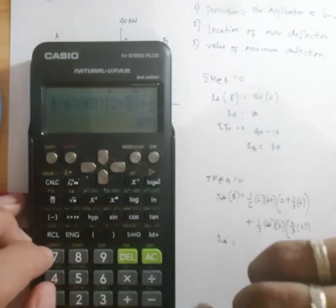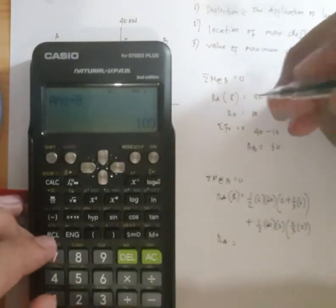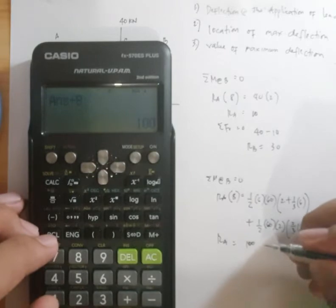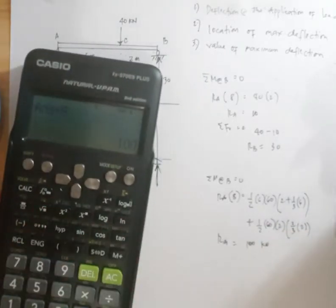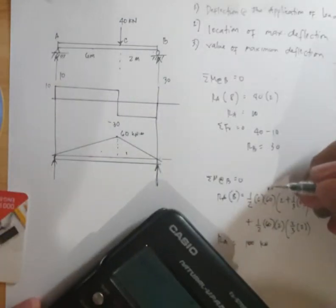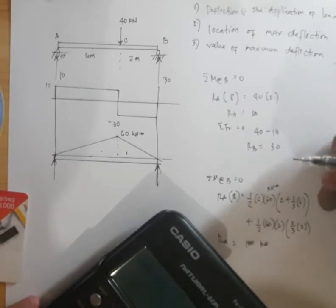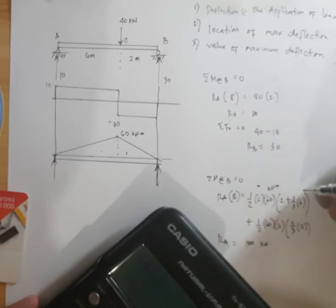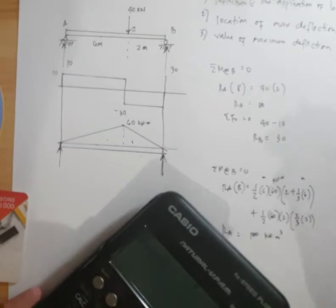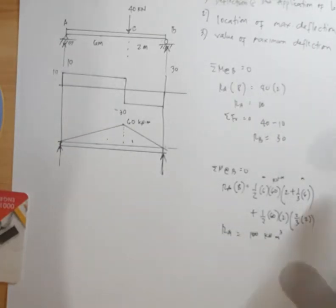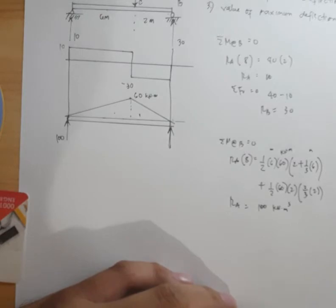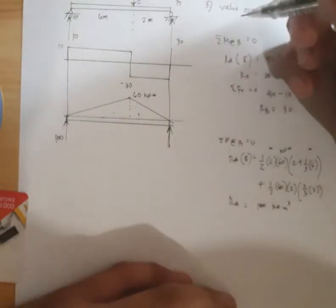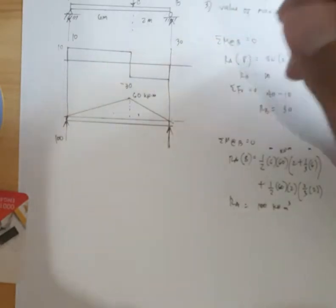So, we have 100 kilonewton. 100 kilonewton. Okay? The 60 is kilonewton meter. Meter. Meter. So, kilonewton meter cube. So, 100 here. Then, what's next?